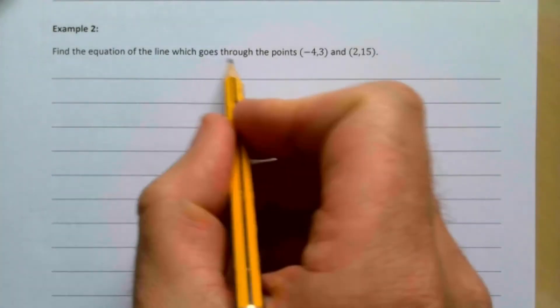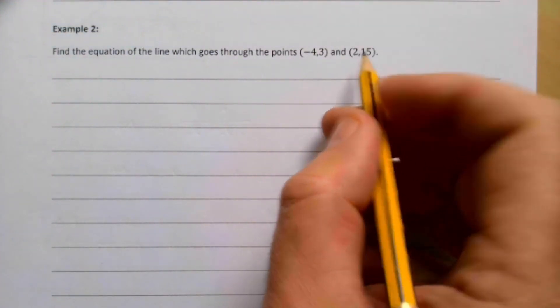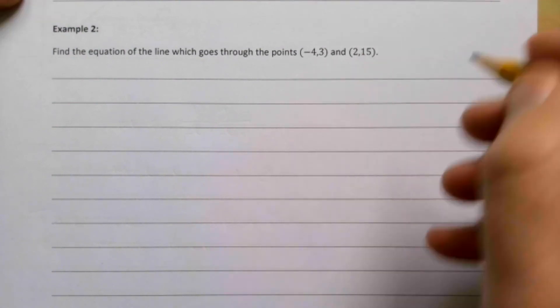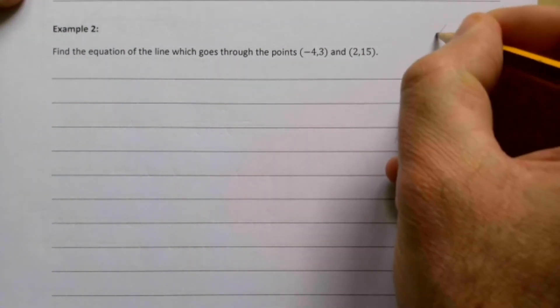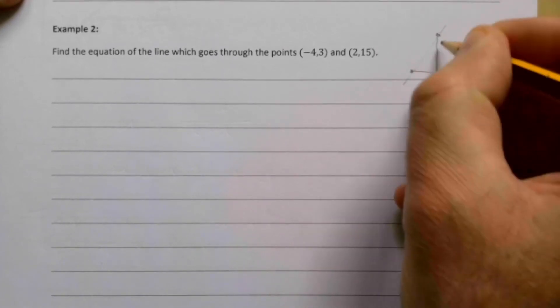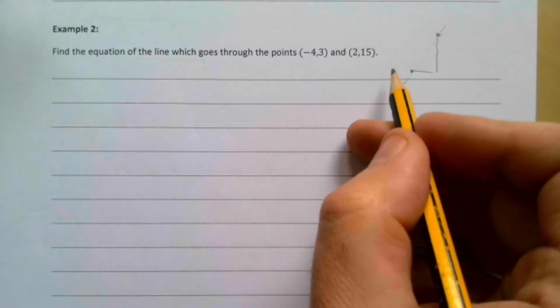Example 2 then, find the equation of a line which goes through the points (-4, 3) and (2, 15). So we have two coordinates here. And if we know two points on the line, we can work out the gradient. If our line looks like this, we have this point here, this point here. Find the difference in the y coordinates. Find the difference in the x coordinates because that's gradient. If we know a gradient and the point on the line, we can find the equation of a line.